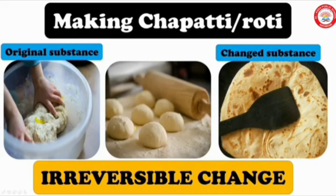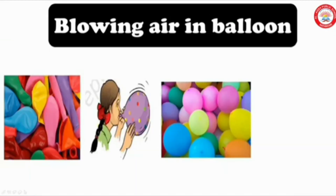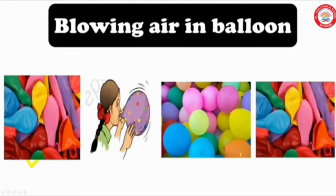Take a balloon and blow it — take care that it does not burst. We can see that a balloon changes its size and shape on blowing air into it. Now let the air escape the balloon. You can see that it regains its shape again. So this is also an example for reversible change.